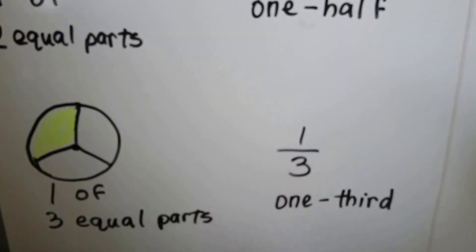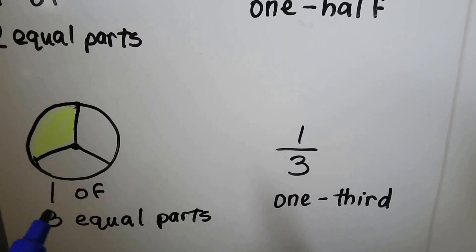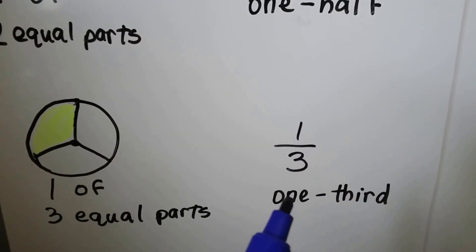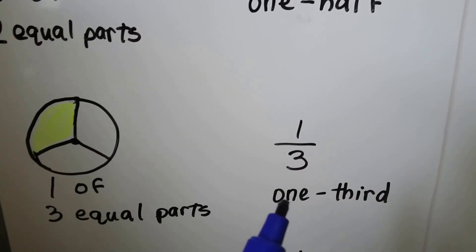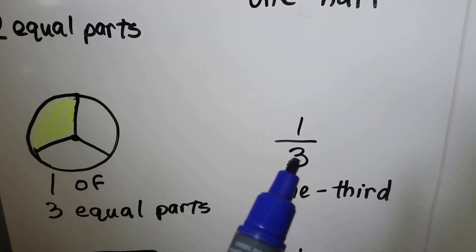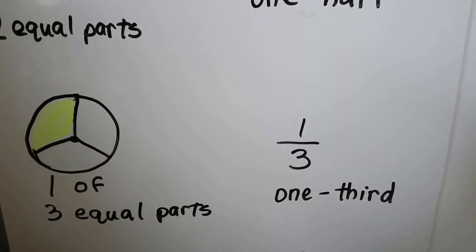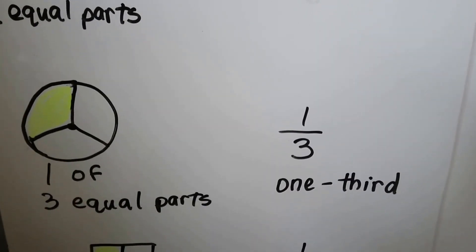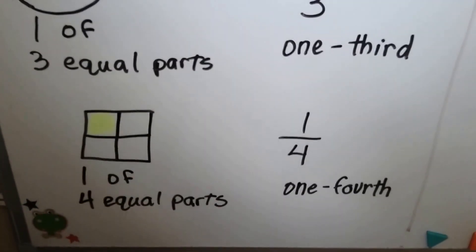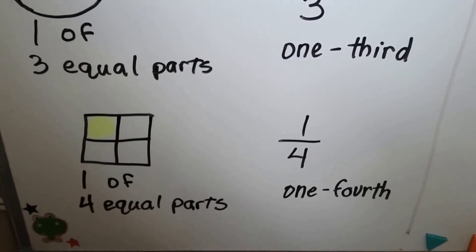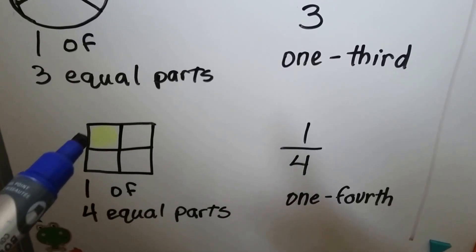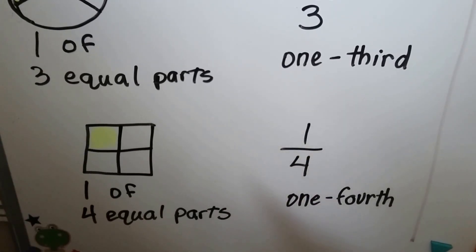Take a look at this circle — it's in three equal parts. One of them is yellow. One of the three equal parts is yellow, so one third is yellow. One part is yellow and there are three equal parts.